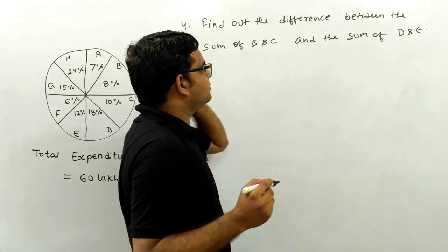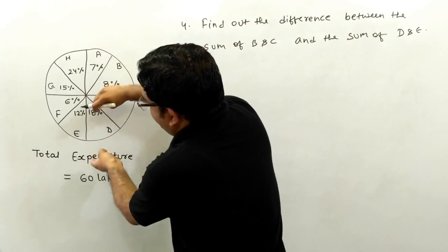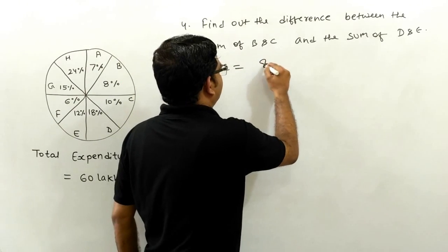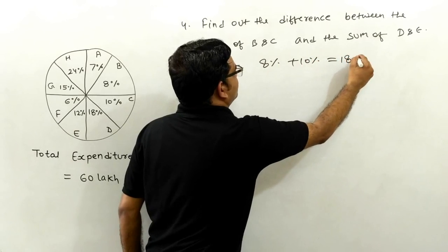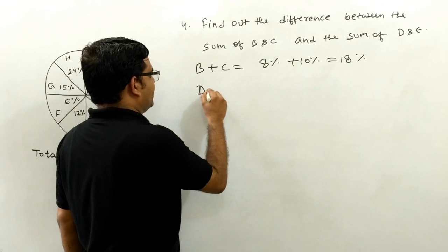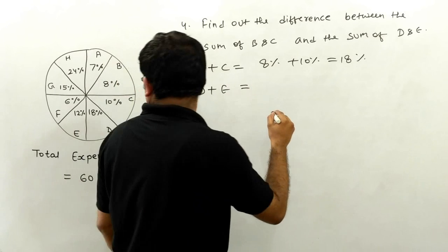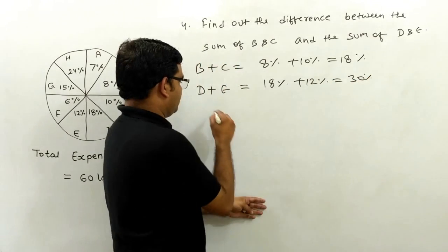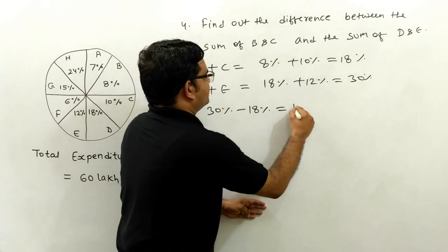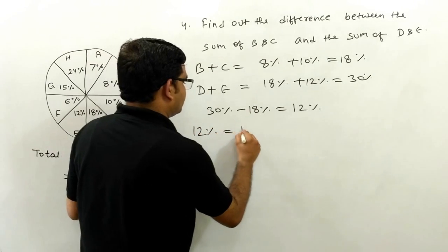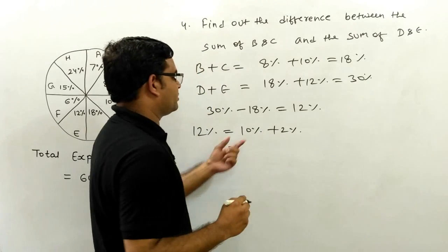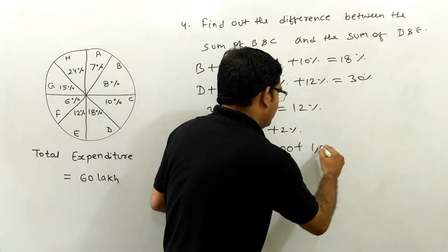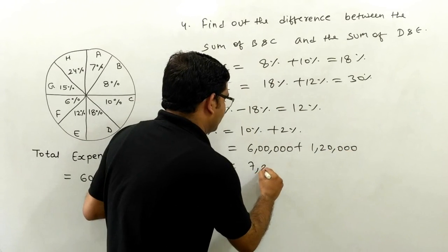The individual values of B, C, D, and E are 8%, 10%, 18%, and 12%. B plus C equals 8% plus 10% = 18%. D plus E equals 18% plus 12% = 30%. The difference between 30% and 18% gives us 12%. The value of 12% is 10% plus 2% = 6 lakh plus 1 lakh 20,000, giving us 7 lakh 20,000.